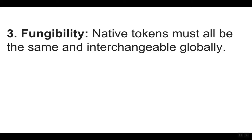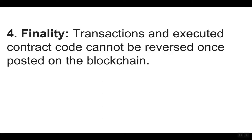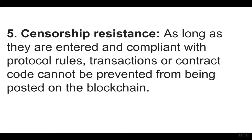Three: fungibility — native tokens must all be the same and interchangeable globally. Four: finality — transaction costs and executed contract code cannot be reversed once posted on the blockchain. Five: censorship resistance — as long as they are entered and compliant with protocol rules, transactions or contract code cannot be prevented from being posted on the blockchain.